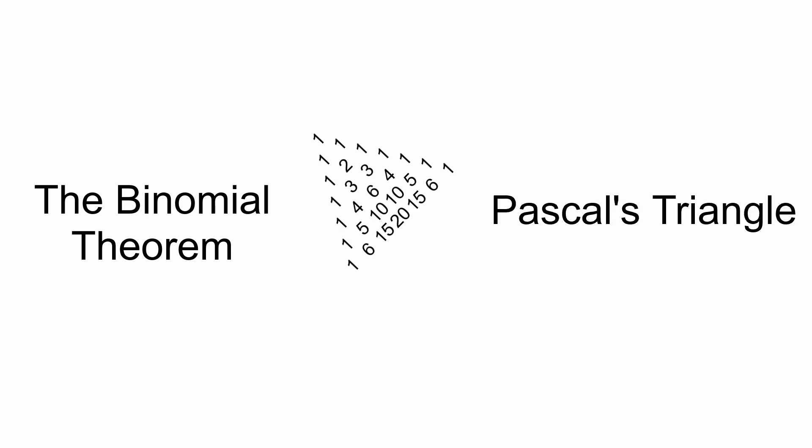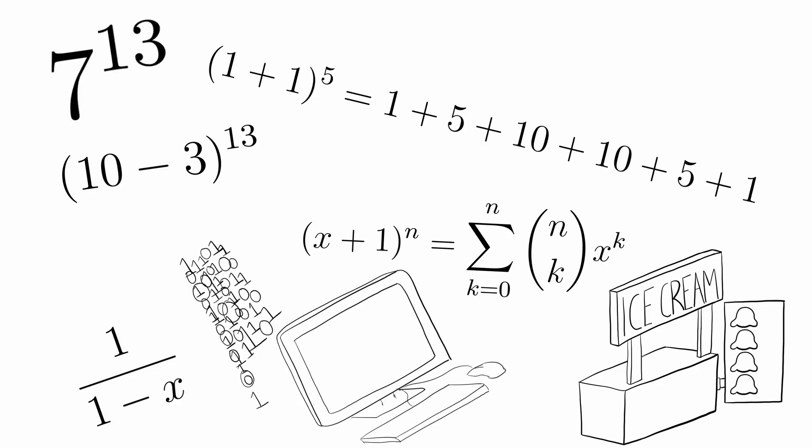That's the main worry I have with grouping the binomial theorem with Pascal's triangle. There are so many different places it shows up that I'm not sure if it's right to group it with Pascal's triangle.